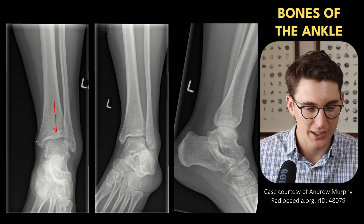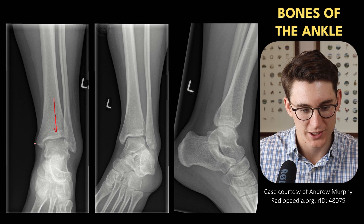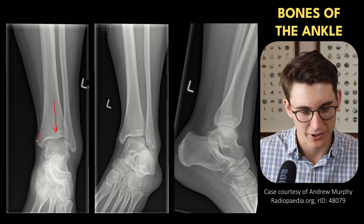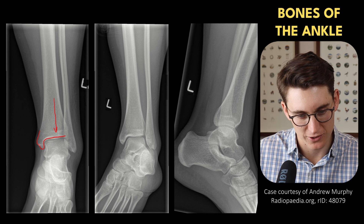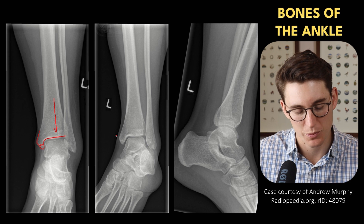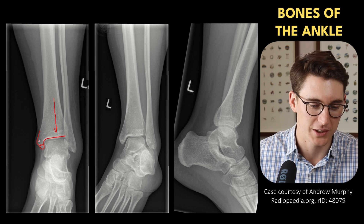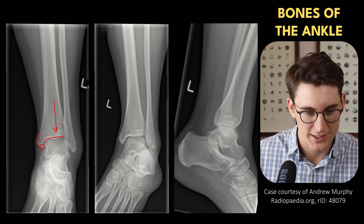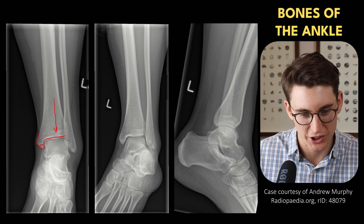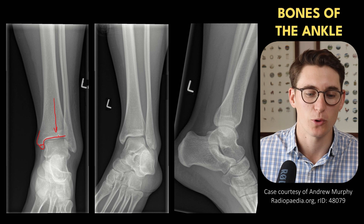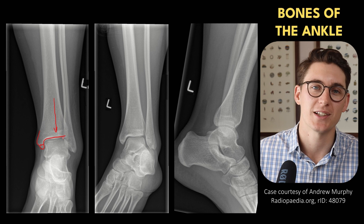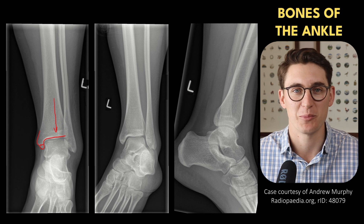The tibia has a medial and inferior process known as our medial malleolus. We can see that the medial malleolus extends right the way down and then out to the tibial plafond. We can also see a little sclerotic line which corresponds to the posterior portion of our medial malleolus. The tibia has a fibular notch in which the fibula sits — this is our tibiofibular syndesmosis, the distal joint between the tibia and fibula, which we'll look at in more detail later.